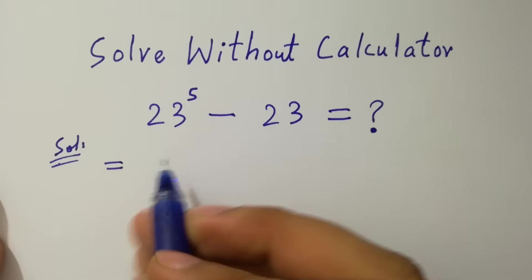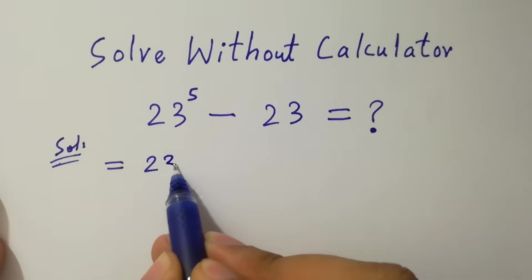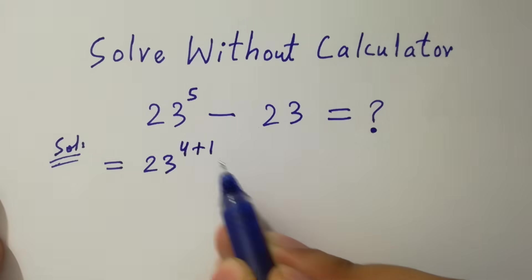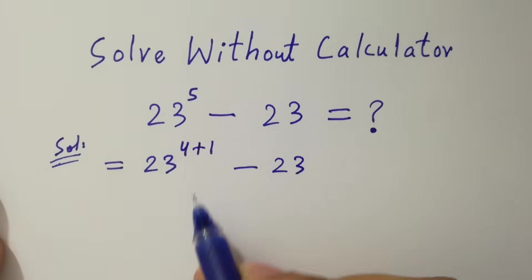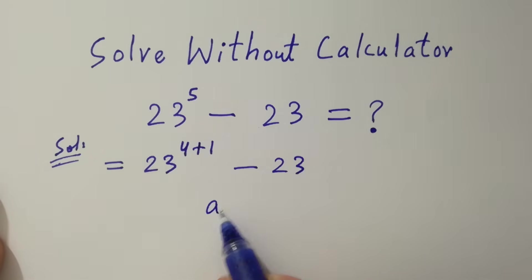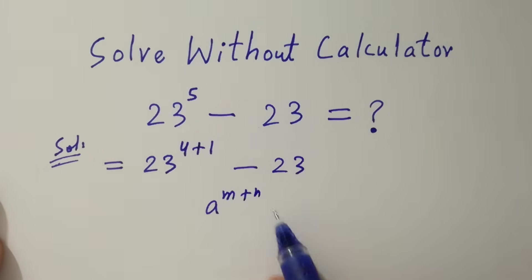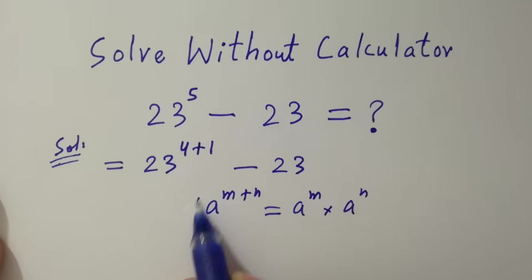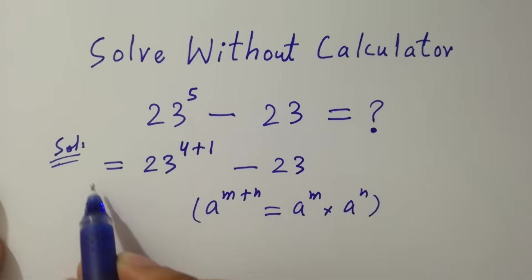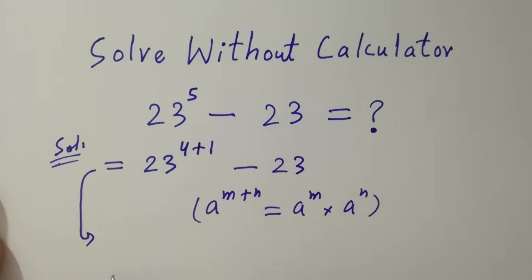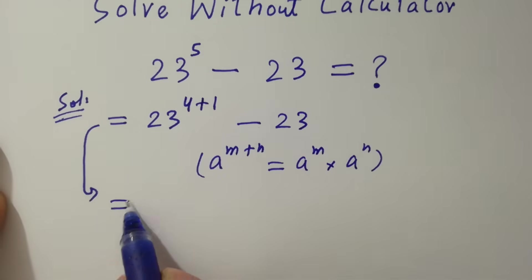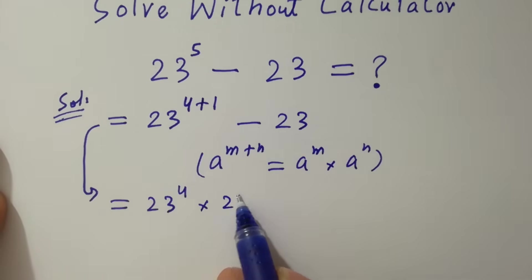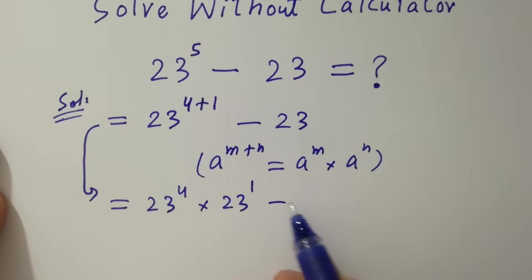This problem is the same as 23 to the power 4 plus 1 minus 23, since 4 plus 1 is 5. Using the rule a to the power m plus n equals a to the power m times a to the power n, it becomes 23 to the power 4 times 23 to the power 1 minus 23.